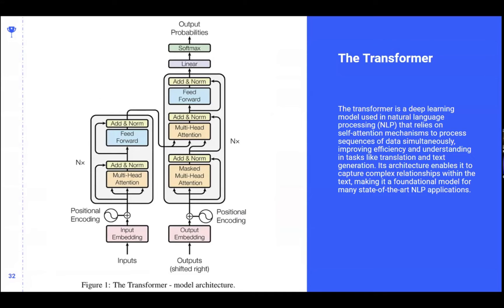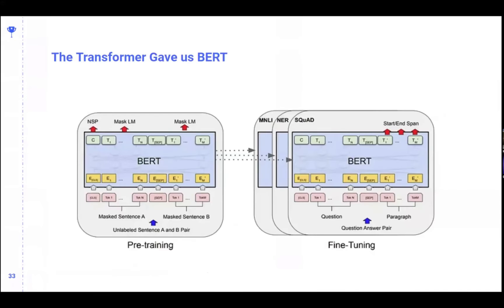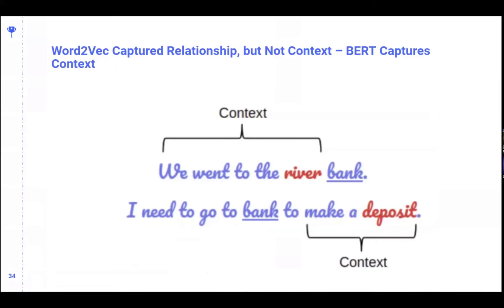What changed everything was the advent of the transformer. Without going into the full complexity, the transformer dramatically changed natural language processing through denser embeddings. Transformer gave us BERT, which dramatically changed Google's understanding of queries and documents — they could not only understand the relationship between words but also the context.